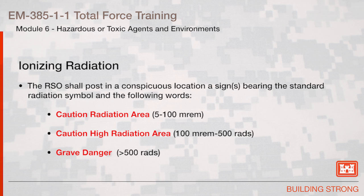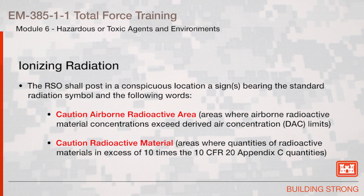The RSO shall post in a conspicuous location a sign or signs bearing the standard radiation symbol and the following words: CAUTION — Radiation area, between 5 and 100 millirems. CAUTION — High radiation area, 100 millirems to 500 rads. GRAVE DANGER — greater than 500 rads. CAUTION — Airborne radioactive area, areas where airborne radioactive material concentrations exceed derived air concentration, or DAC, limits. And CAUTION — Radioactive material, in areas where quantities of radioactive materials in excess of 10 times the 10 CFR 20 Appendix C quantities are present.